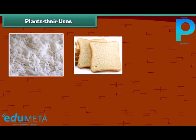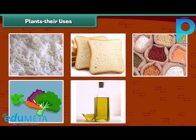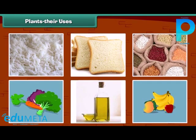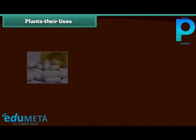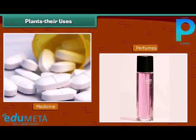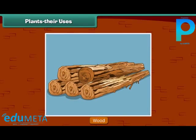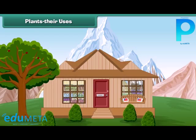We know that we get our food items from the plants. Besides the food items, we also get many other things from plants. Many medicines and perfumes are made from plants. Plants also give us wood. In some places, houses are made up of wood.